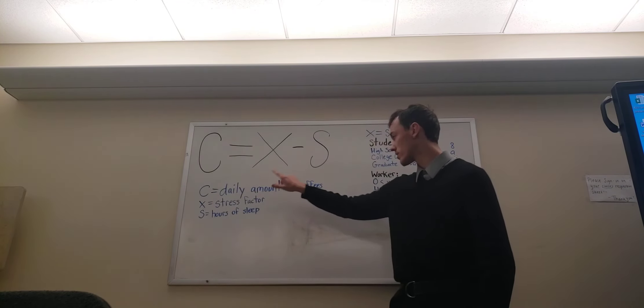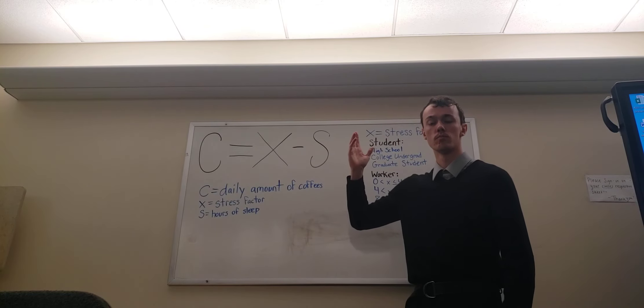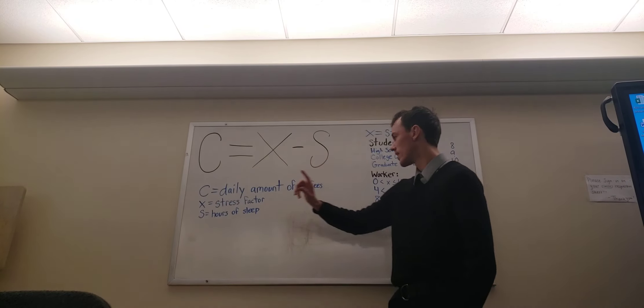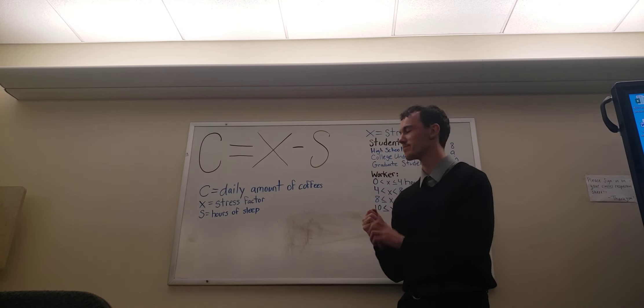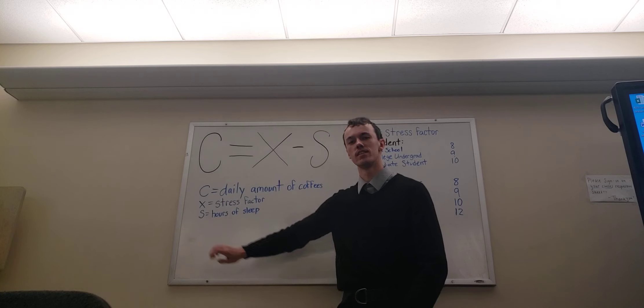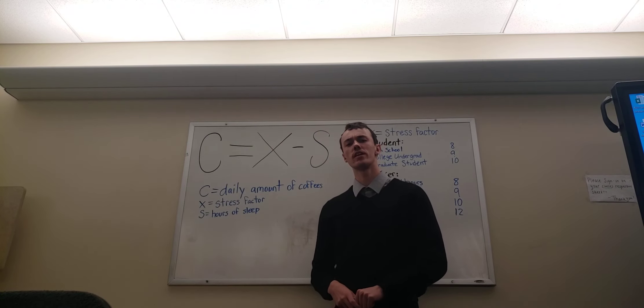C is the daily amount of coffees predicted to consume. X is what is called a stress factor. I will detail that in a minute. And S is your hours of sleep you got the night before.